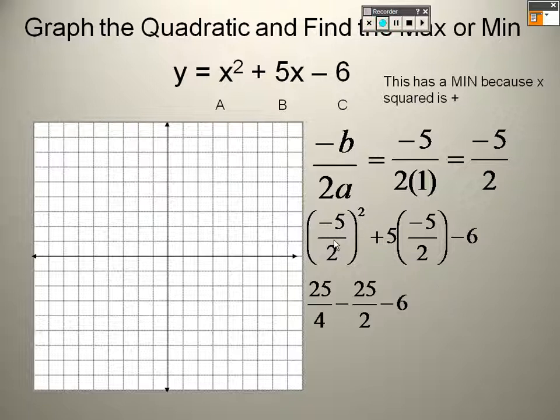So I get 25 over 4 because I square both those, negative 25 over 2 minus 6. I put it over 1 and I find a common denominator, so I multiply the top and the bottom of this one by 2, multiply the top and the bottom of this one by 4. So I get 25 over 4, 50 over 4, 24 over 4. So I get 25 minus 50 minus 24, negative 49 over 4.